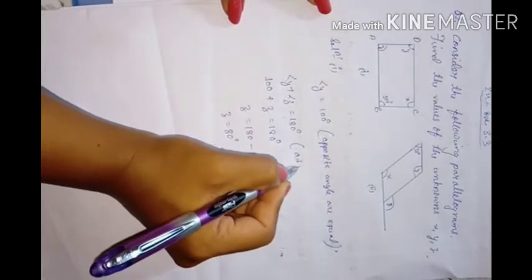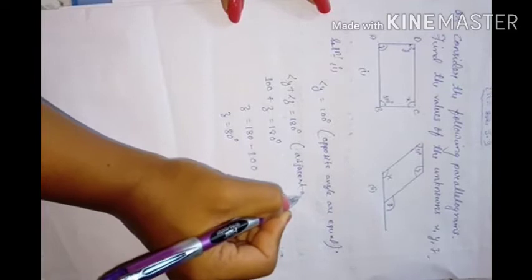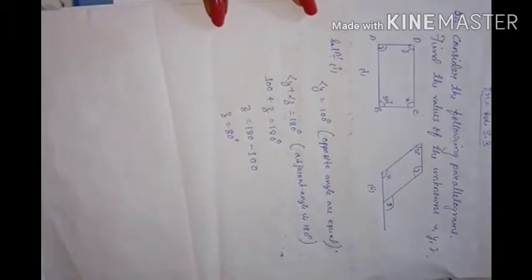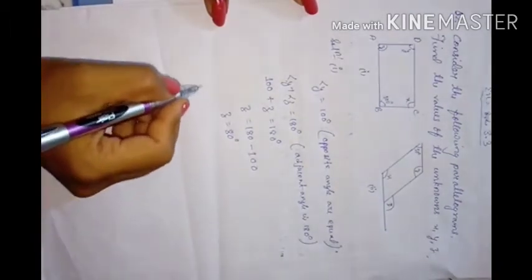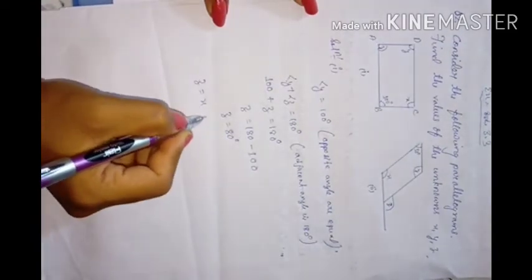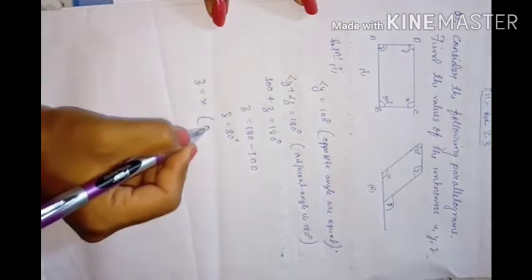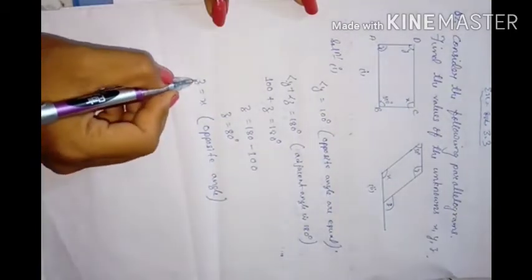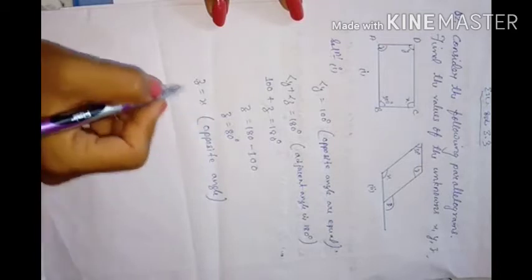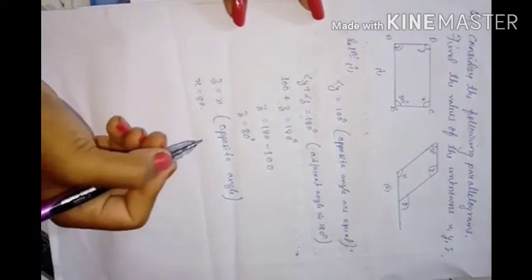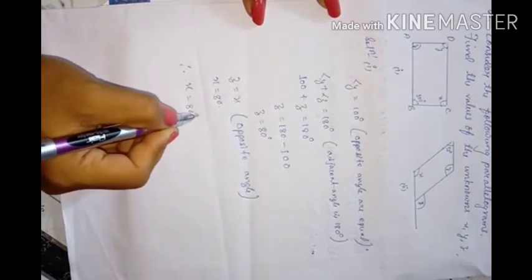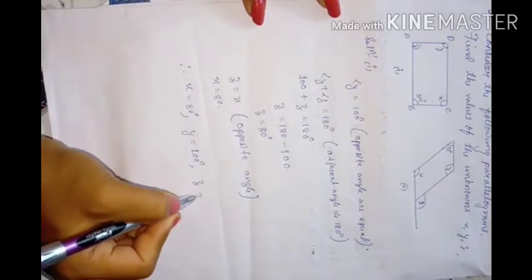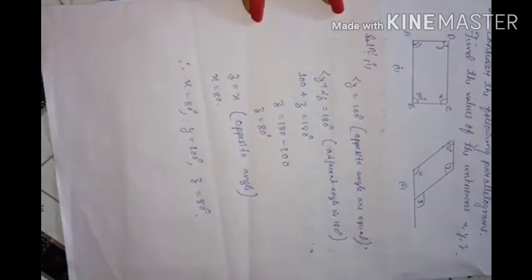Adjacent angles of a parallelogram sum to 180 degrees. Also, z equals x because they are opposite angles. Since z is 80 degrees, x is also 80 degrees. Therefore x equals 80 degrees, y equals 100 degrees, and z equals 80 degrees.